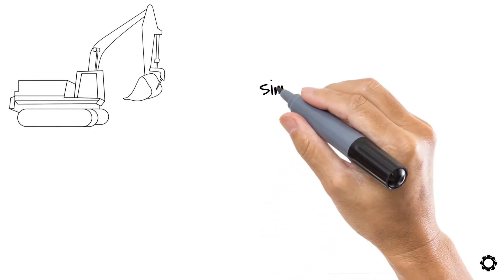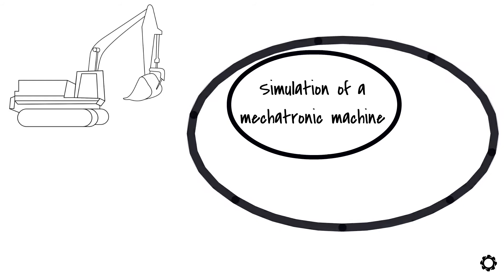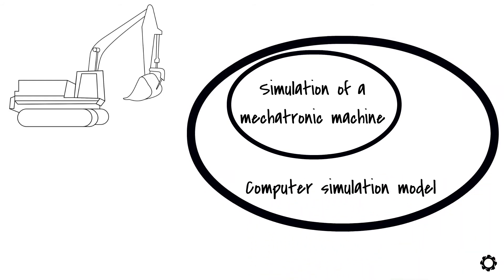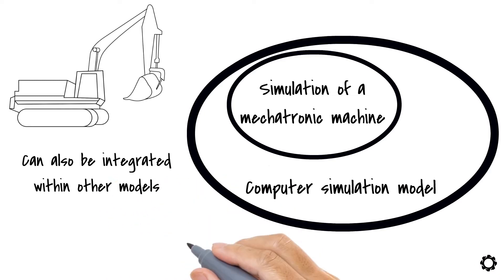Please note that the simulation of a mechatronic machine covers only a small fraction of the entity of a computer simulation model. It, however, can also be integrated within other models, where, for example, a whole production line is simulated.